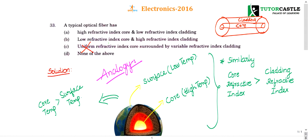Everybody will eliminate third and fourth option because it cannot be uniform. They may be thinking core is having higher refractive index or cladding is having higher refractive index or which is having lower. They may be confusing between option A and B.